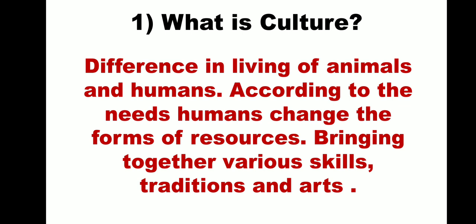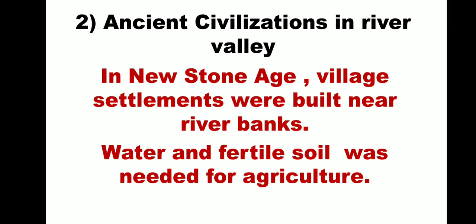Let us see the next point: ancient civilization in river valleys. The new culture was based on agriculture. Agriculture needs fertile land, soil, and proper water for growing good crops. So village settlements flourished near the banks of rivers. Thus, the new stone age culture flourished along the river banks.